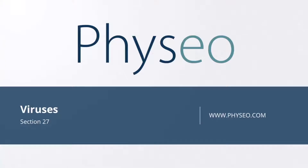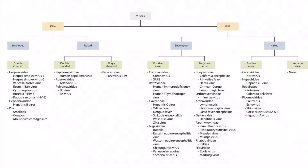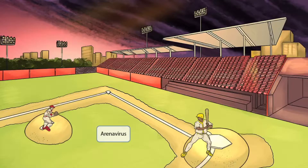Welcome to Section 27 of Viruses. This is our virus overview figure, and in this video we'll be discussing arena viruses, including lymphocytic choriomeningitis virus and Lassa fever encephalitis. You can see these viruses right here. To help you remember that this image is about arena viruses, we'll show everything taking place inside of a baseball arena.